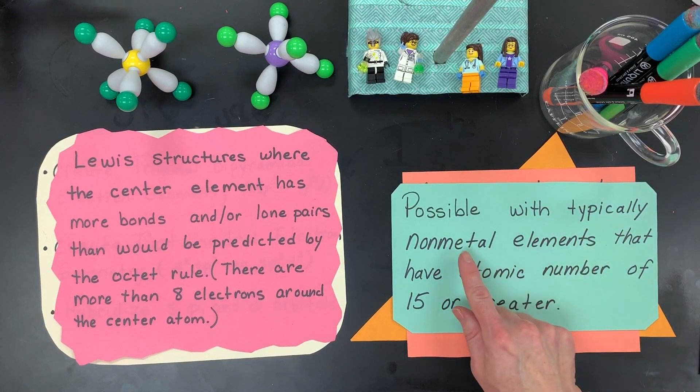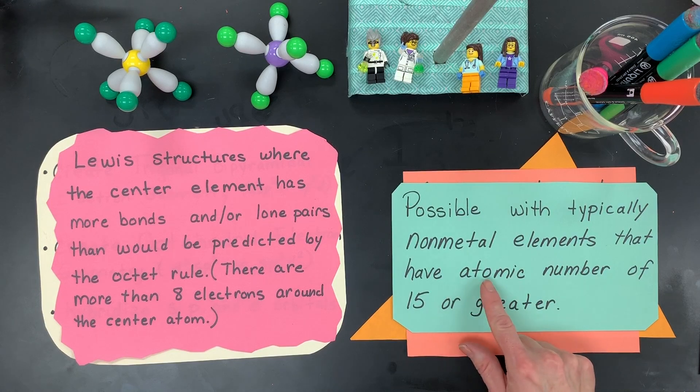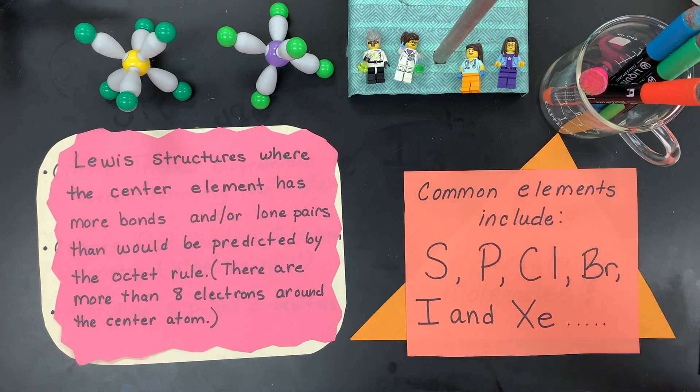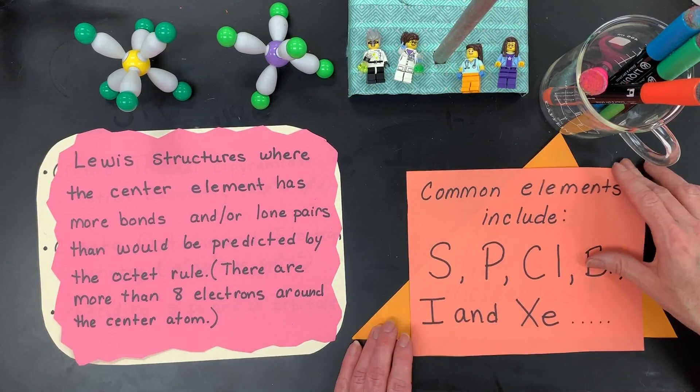It's possible with elements that are typically non-metals and have to have atomic number 15 or greater. Some examples include sulfur, phosphorus, chlorine, bromine, iodine, and xenon.